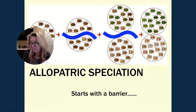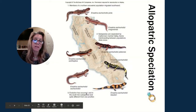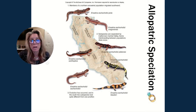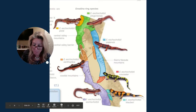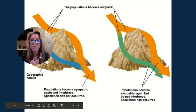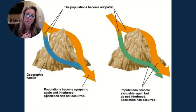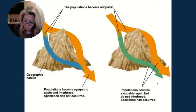Over time, you start to accrue small differences that could lead to enough change that even if reunited, you have already achieved reproductive isolation and you have two species. Allopatric speciation: species separated by a geographical barrier undergo genetic drift and then different selection pressures. An example is the salamanders moving from northern to southern California — a big desert in the middle separates them, creating a ring species.